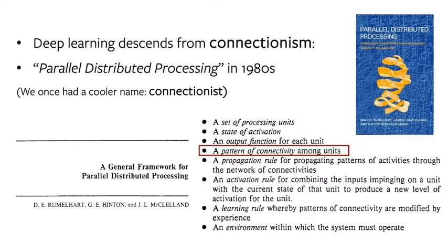Going back to AI, you probably know that deep learning descends from something called connectionism. The famous PDP book laid out the framework for deep learning in 1980. And one of the eight key components, among things like activation function and propagation rule, is a pattern of connectivity among units. And this will be the main focus of this tutorial too.